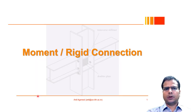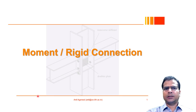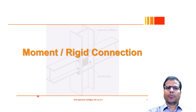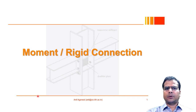Welcome back to the fourth week of this course on the design of steel connections. This week we are going to talk about different types of moment and rigid connections. In the previous week we discussed in detail the different types of simple or shear connections and the different possibilities that exist for moment connections — the basic configurations. This week we will go into the design examples and design considerations for such connections.